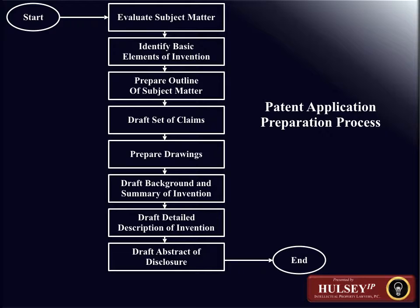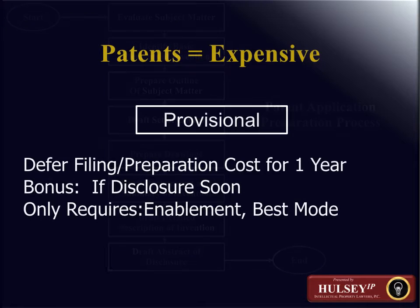Once you've done this, in the process of preparing an application, the next step — and what's interesting is that the claims of a patent define the intellectual property that a patent protects, and they appear at the end of the patent document — but clearly the best way to prepare the application is to focus your efforts initially on drafting the claims, because the claims will identify what is new and novel, in a way that is descriptive of what should be described in both the figures and the technical specification.